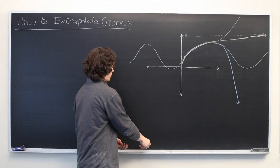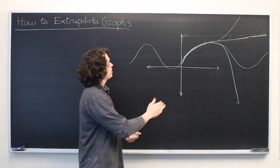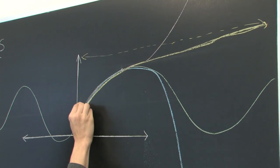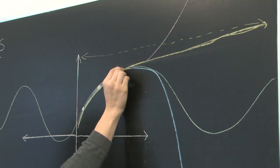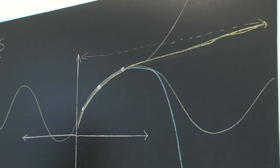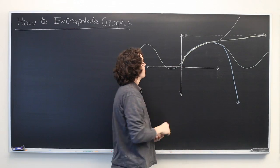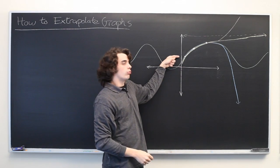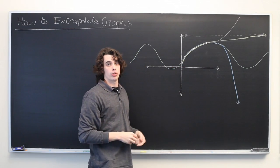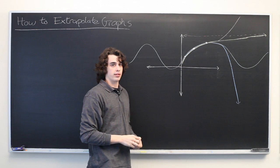Okay. Well, let's suppose that these data points that we had earlier, which have now been buried, represent something else. Let's say the x values represent the number of months from a given date. And the y value represents the average temperature of a particular region on that date.